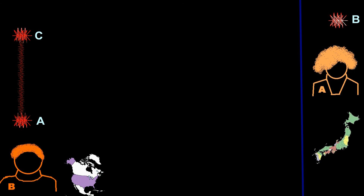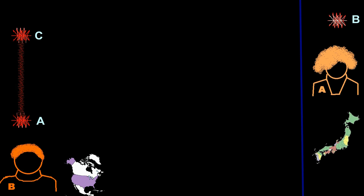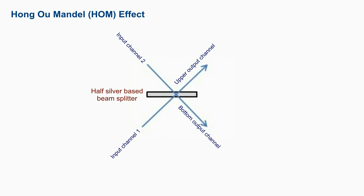But still, the entire state is not yet copied — the polarization has been successfully transferred, but the rotational state is not yet copied. We will see how to recover the rotational state later. Now, let's see how to create entanglement between photons A and C. The Hong-Ou-Mandel effect will make two individual photons entangled.